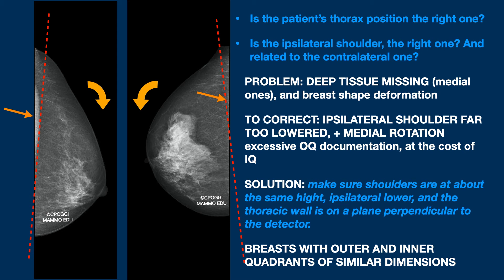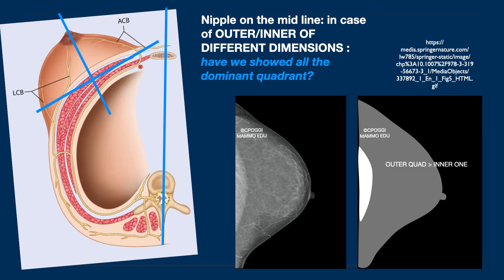The nipple is not on the midline — we are, of course, talking about breasts with outer and inner quadrant of the same dimensions. One of the quality criteria discussed in the Artifact Series lessons is, in fact, the nipple on the midline. It is a geometry to be respected always if outer and inner quadrant are of similar dimensions. If they are not, the nipple will be naturally shifted towards the smaller quadrant. If there is a dominant quadrant and it is not completely shown, this is one of the reasons why you don't get the pectoralis major on the image in the CC view.